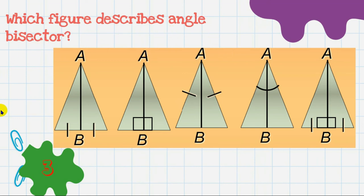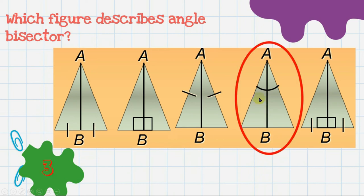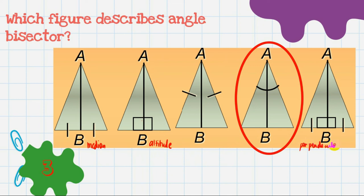Question 3: which figure describes the angle bisector? We have five figures. Look for markings on the angles showing the angle is divided into two congruent parts — that is the fourth figure. The first figure shows the median, the second shows the altitude (perpendicular from the vertex), and the fifth shows the perpendicular bisector.